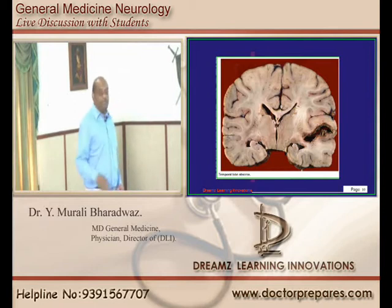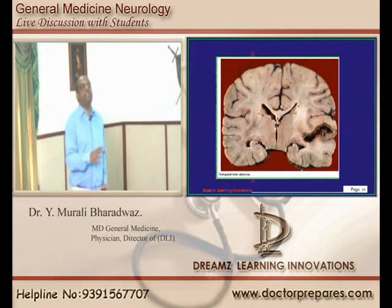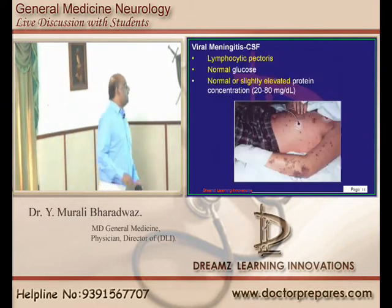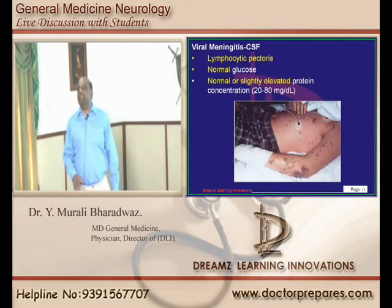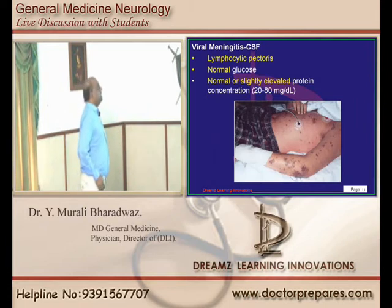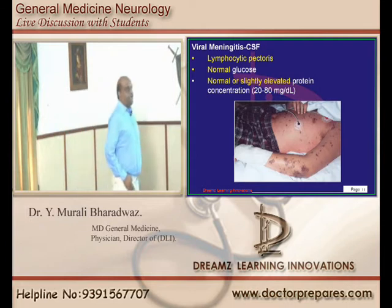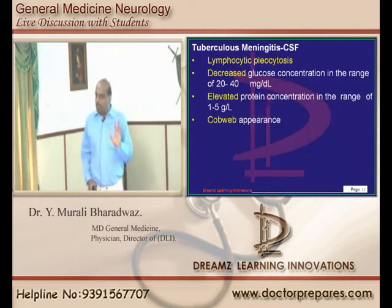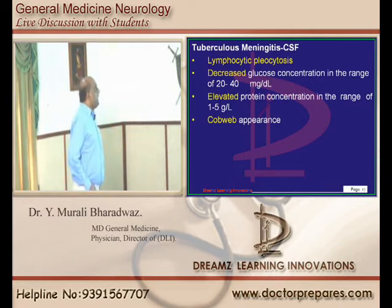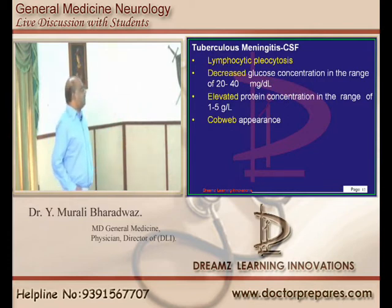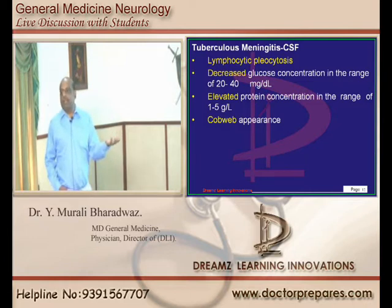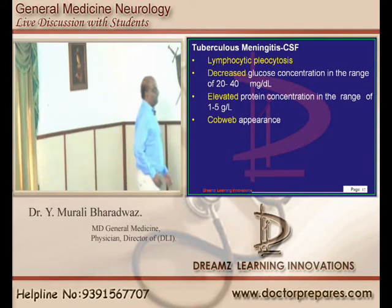Temporal lobe abscess can be one of the important complications of prolonged bacterial meningitis. In viral meningitis, there is lymphocytic predominance with normal glucose and normal to slightly elevated protein. In TB meningitis, it is also lymphocytic predominant, with low glucose concentration and high protein — just like bacterial meningitis — but a cobweb appearance is what you need to remember.